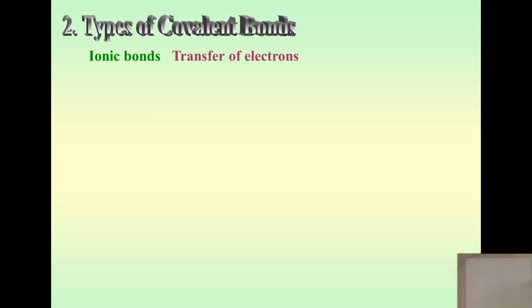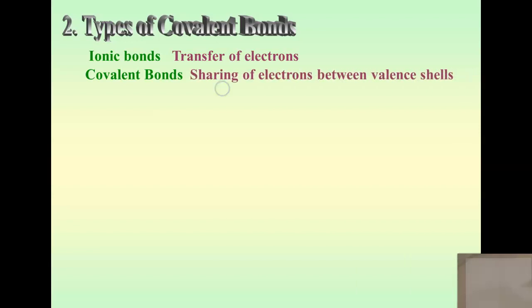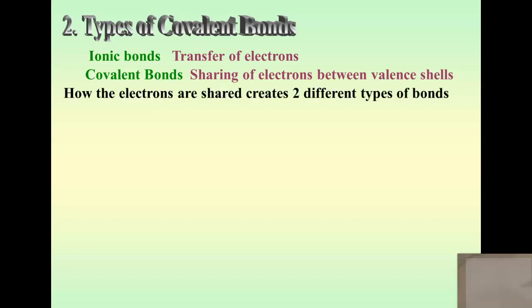You either lose or you gain — there's no middle ground. But when we start talking about covalent bonds, that's where we're sharing electrons. The electrons are bouncing around between the different valence shells, and we can have different types of sharing that create different types of covalent bonds. There's pretty much one type of ionic bond, but we're going to break down covalent bonds into two different categories.